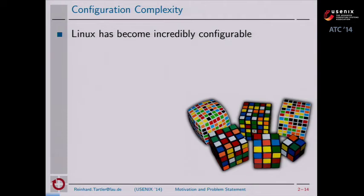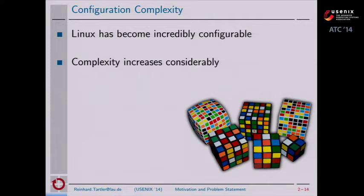The topic I'm talking about today is configuration complexity. In Linux, over the last decade, Linux has become incredibly configurable. This configurability has come at a cost, namely complexity. The complexity of modern Linux kernels has increased considerably, and complexity is also a humongous source of bugs in the code.